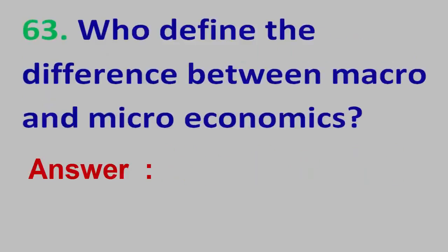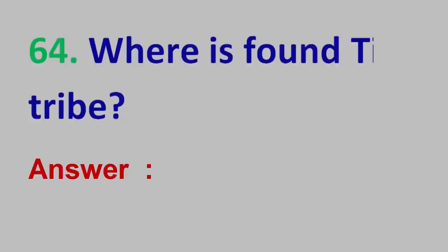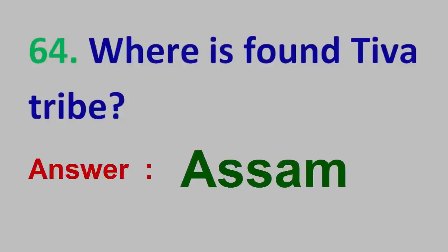Question No. 63: Who defined the difference between macro and micro-economics? Answer: Ragnar Frisch. Question No. 64: Where is the Tiva tribe found? Answer: Assam.